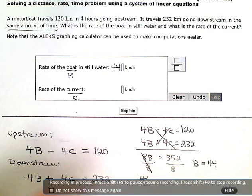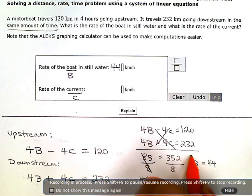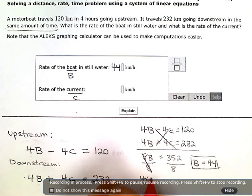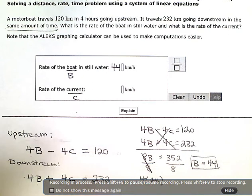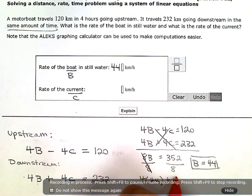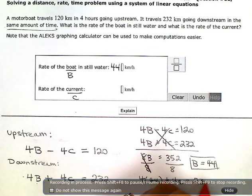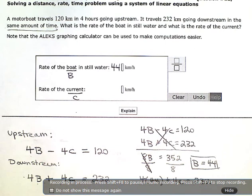So 4 times 44 plus 4C equals 232. 4 times 44 will give me 176 plus 4C equals 232.